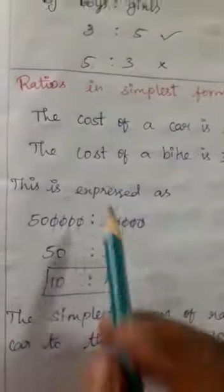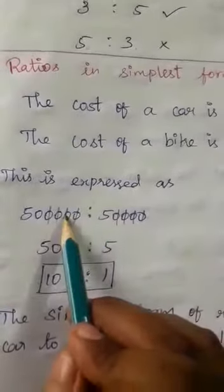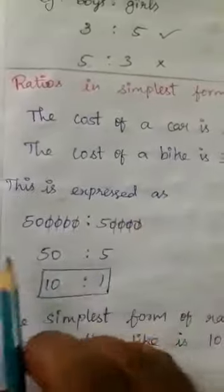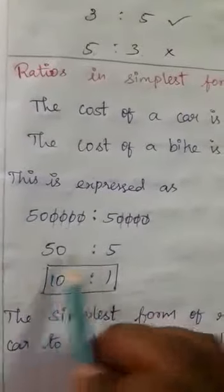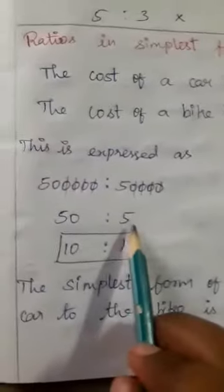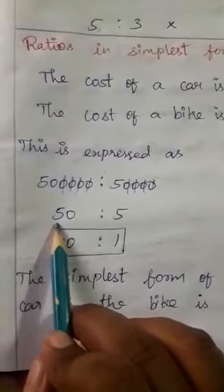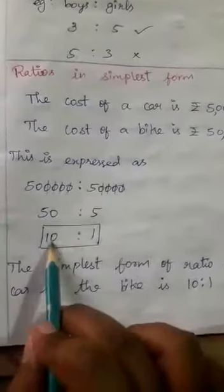We have to cancel the zeros in both numbers. 5 lakh has 5 zeros and 50,000 has 4 zeros, so we cancel 4 zeros on both sides. The balance numbers remaining are 50 and 5. We simplify further: 5 goes into 50 ten times, so the answer is 10 is to 1. This is the simplest form of the ratio of the car to the bike — 10 is to 1.